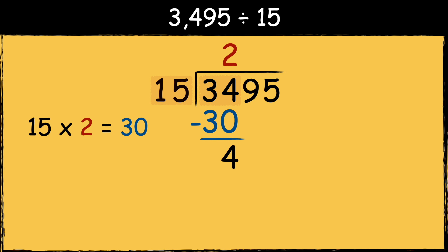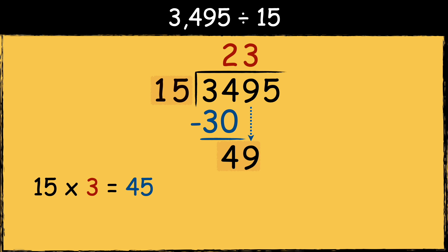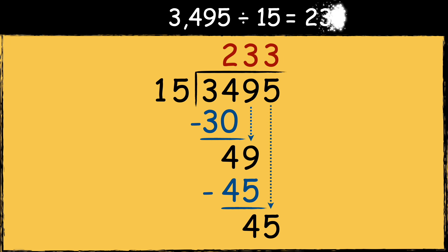Now we can bring the next digit down. How many 15s go into 49? 15 goes into 49 three times, so 3 goes at the top. Next we find the remainder: 49 take away 45 is 4. Now we bring the last digit down. Finally, how many 15s go into 45? 15 goes into 45 three times, so 3 goes at the top. The answer is 233.